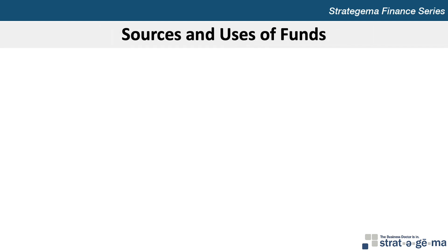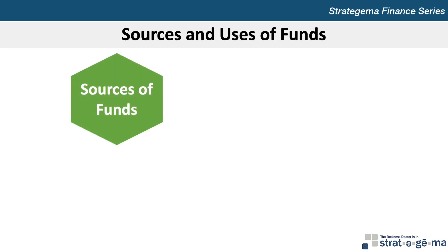Like commercial banks, SIs serve as financial intermediaries, but their sources and uses of funds differ. SIs have three main sources of funds: deposits, borrowed funds, and capital. Savings institutions obtain most of their funds from a variety of savings and time deposits, including passbook savings, retail certificates of deposits, or CDs, and money market deposit accounts, or MMDAs.